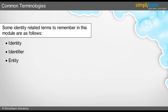Another identity related term is entity. It refers to types which have an identity, such as users, devices, and codes. Entitlement is the process of managing privileges to identities and related attributes.